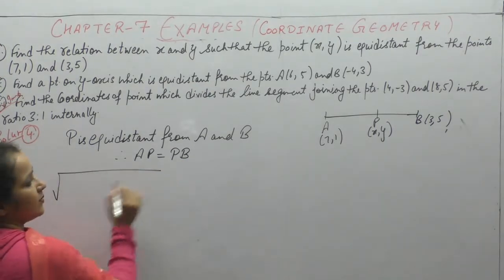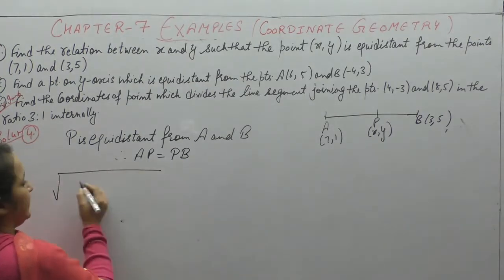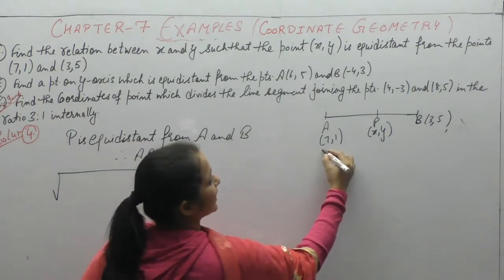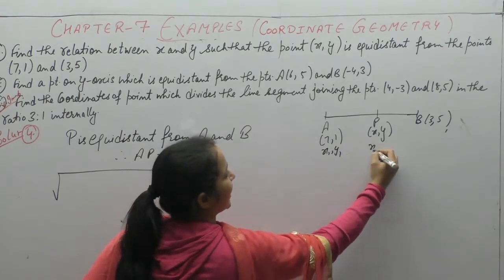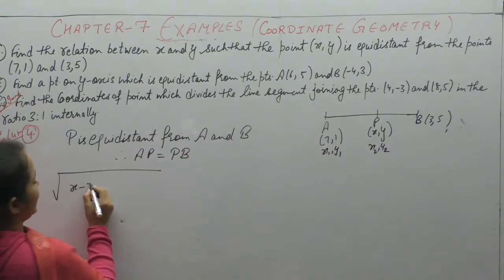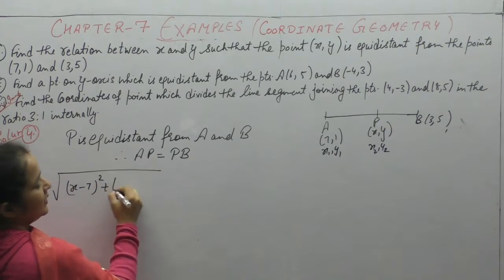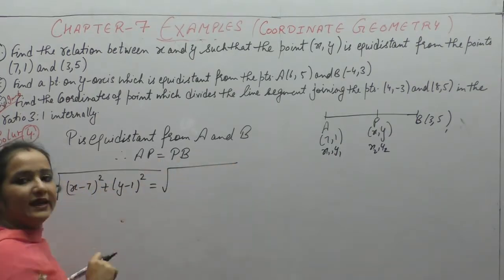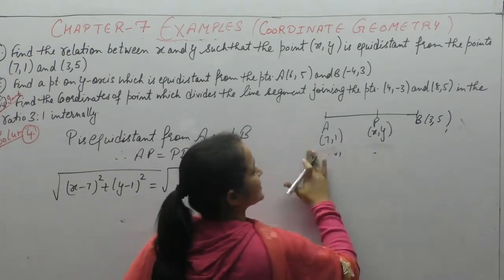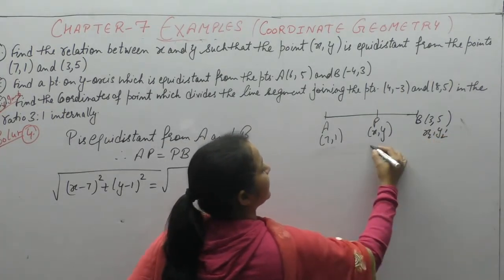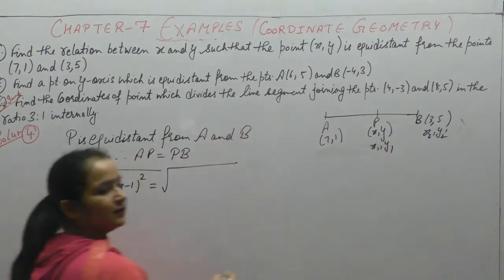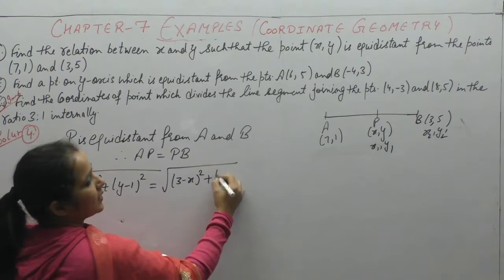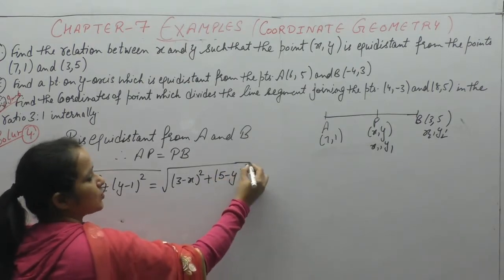By applying distance formula, AP: P's coordinates are (x2,y2) and A's coordinates are (x1,y1), so √[(x2-x1)² + (y2-y1)²]. PB: B's coordinates (x2,y2) and P's coordinates (x1,y1), so √[(x2-x1)² + (y2-y1)²].